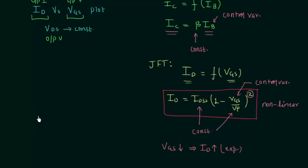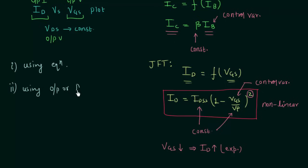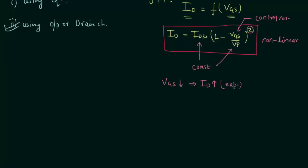There are two ways to obtain the transfer characteristics. The first way is to use Shockley's equation directly. The second way is to use the output or drain characteristics. We will use the second way — using the drain characteristics — because we already know how to obtain those.